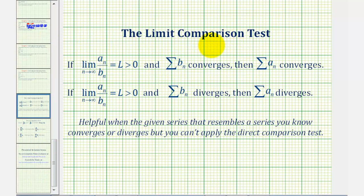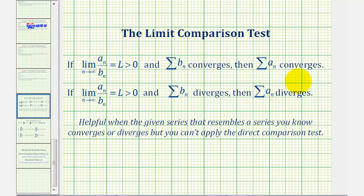The limit comparison test tells us that if the limit as n approaches infinity of a sub n divided by b sub n equals L, which is greater than zero, then if the sum of b sub n converges, then so does the sum of a sub n. So because we're comparing to a known converging series, we want to show this limit is greater than zero, where the sum of b sub n is a known converging series and the sum of a sub n is the given series.